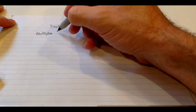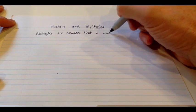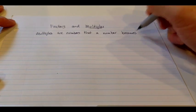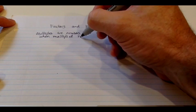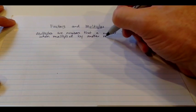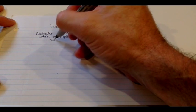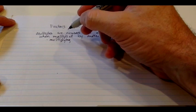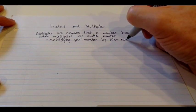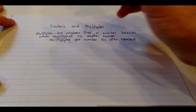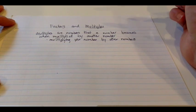Multiples are numbers that a number becomes when multiplied by another number. In essence, what you're doing is you are multiplying your number by other numbers. A little confusing - we've got the numbers, in other words multiples and multiplied, and then we've got numbers, number, and number. Somewhat confusing, so let's unpack that a little bit.